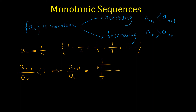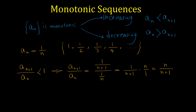If we simplify, we have 1 over (n+1) multiplied by the reciprocal of the denominator, which is n over 1. Multiplying top by top and bottom by bottom gives us n over (n+1). This fraction is less than 1 because the numerator is less than the denominator. So this ratio is less than 1, and therefore this sequence is a decreasing sequence.